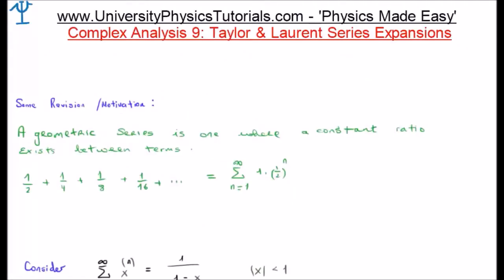I'd like to do some revision or motivation. A geometric series is one where a constant ratio exists between all the terms. Consider for example 1/2 plus 1/4 plus 1/8 plus 1/16 and so on. It can be shown that this is in fact the series from n equals 1 to infinity of (1/2)^n.